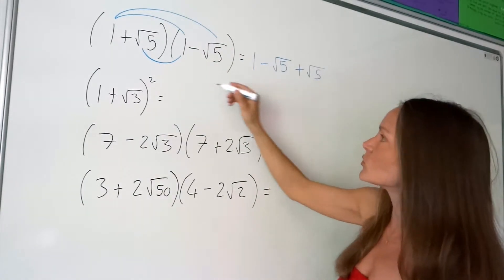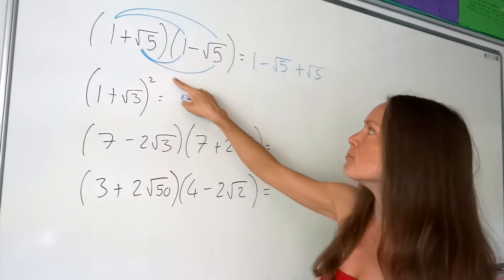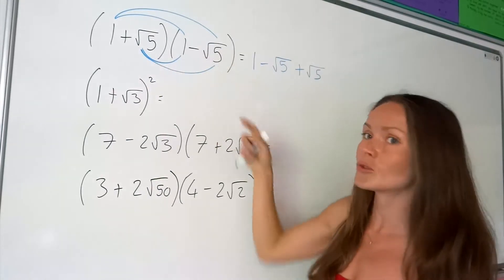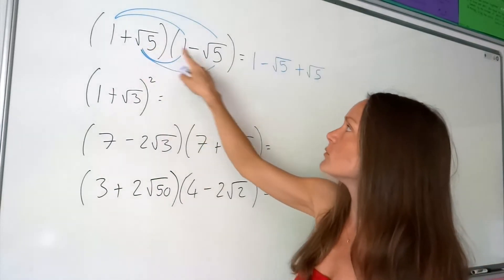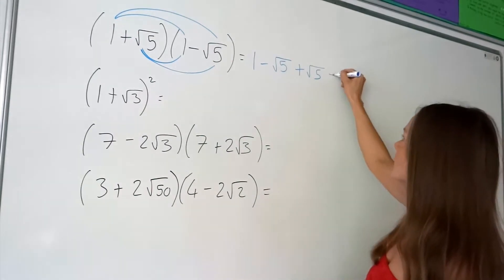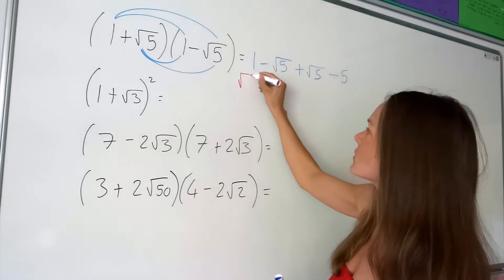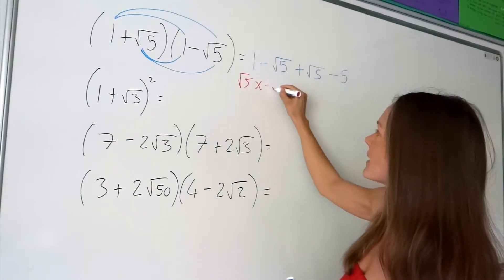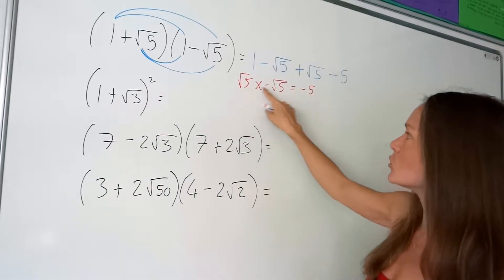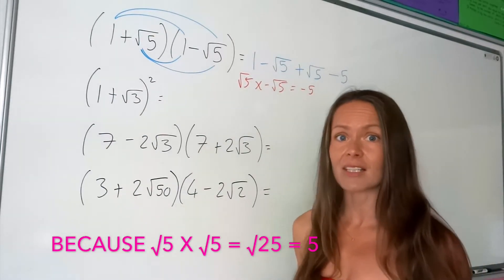And the last two terms here: we've got positive root 5 multiplied by negative root 5. When we multiply those two terms together, those square root symbols cancel each other out, so we're just left with negative 5. When you times a positive root with a negative root, it just leaves you with negative 5, because the two square roots, when you multiply them together, they cancel each other out.